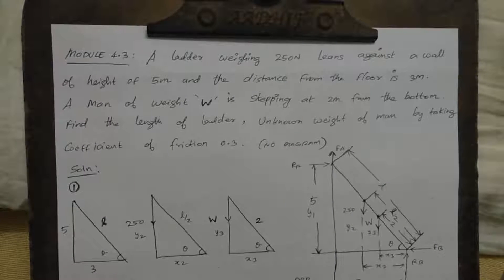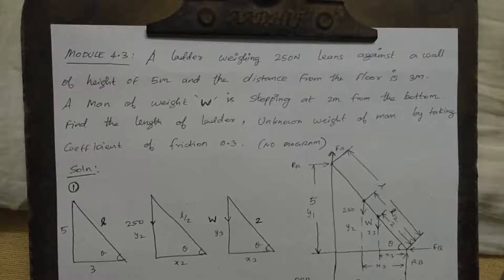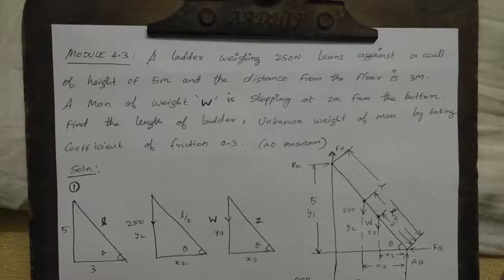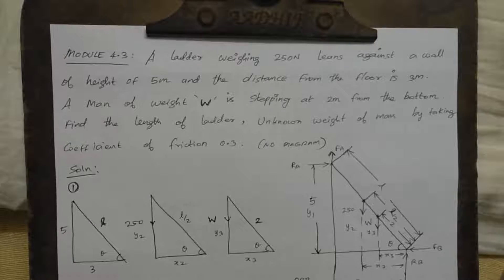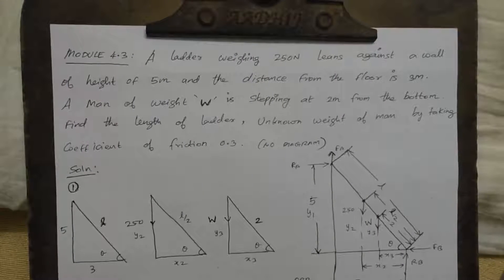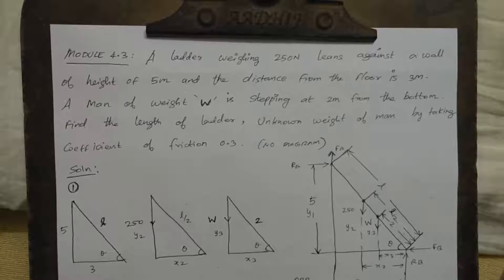Welcome to model number 4.3. A ladder weighing 250 Newton leans against a wall of height 5 meters and the distance from the floor is 3 meters. A man of weight W is stepping at 2 meters from the bottom. Find the length of the ladder and the unknown weight of the man by taking coefficient of friction 0.3.